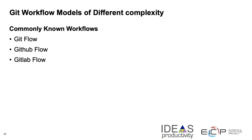So far I've talked about the mechanisms of Git workflows. Now I'm going to review some models of workflows so that you can see how those mechanisms can be applied, and then I'll continue with workflows of some actual scientific software development projects. These are some commonly known models that have a variety of complexity.